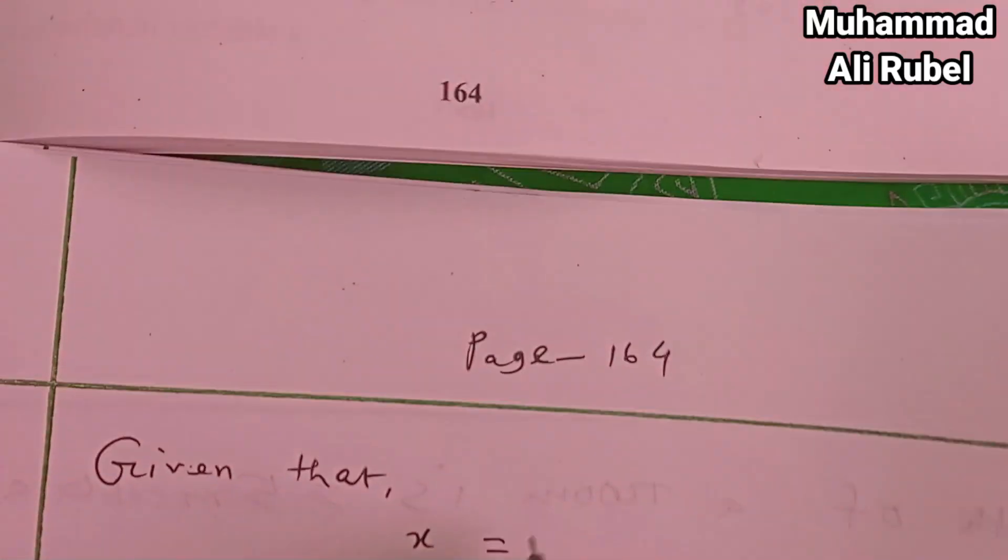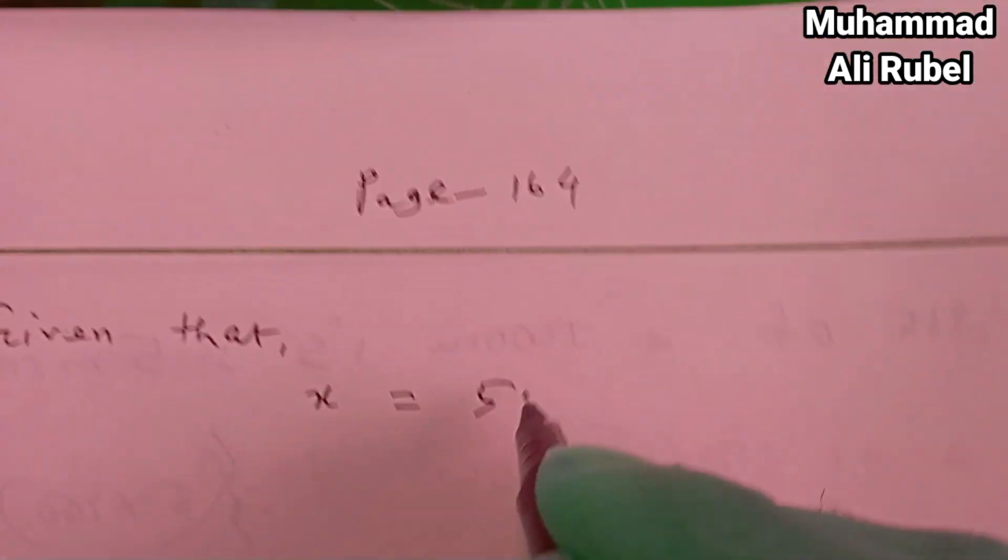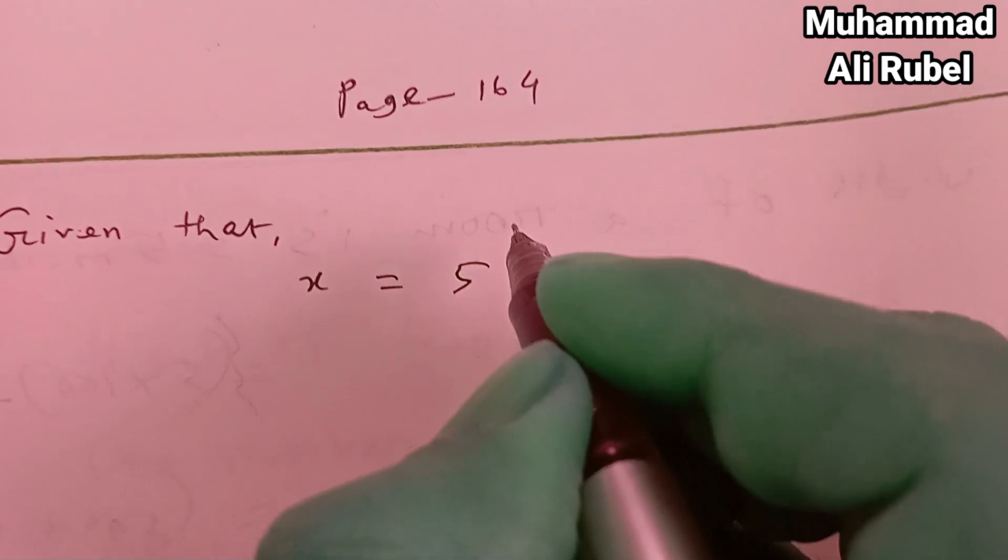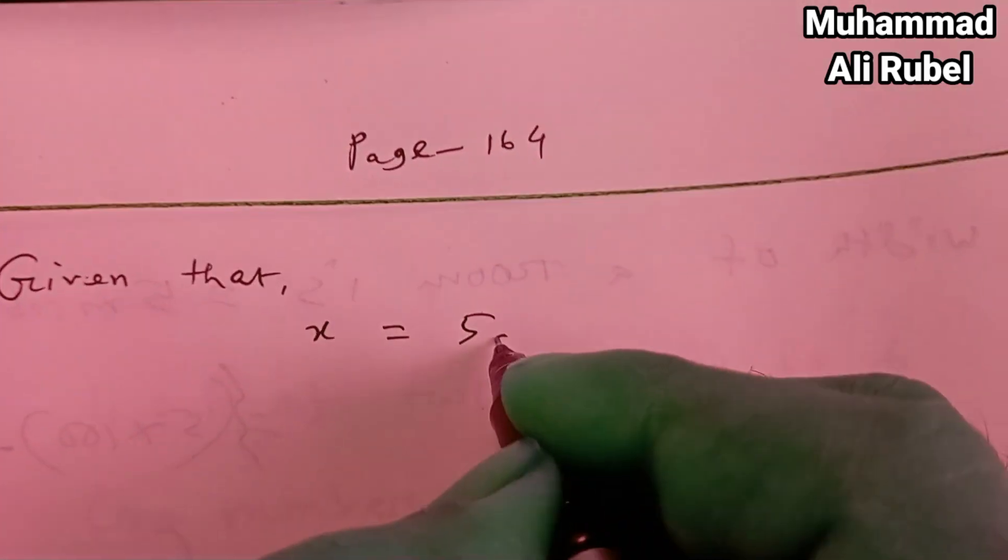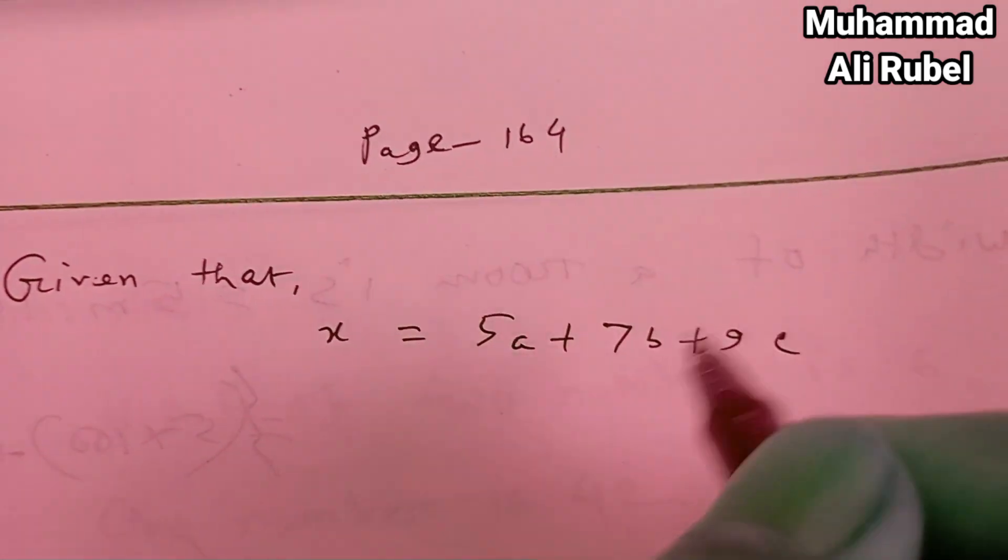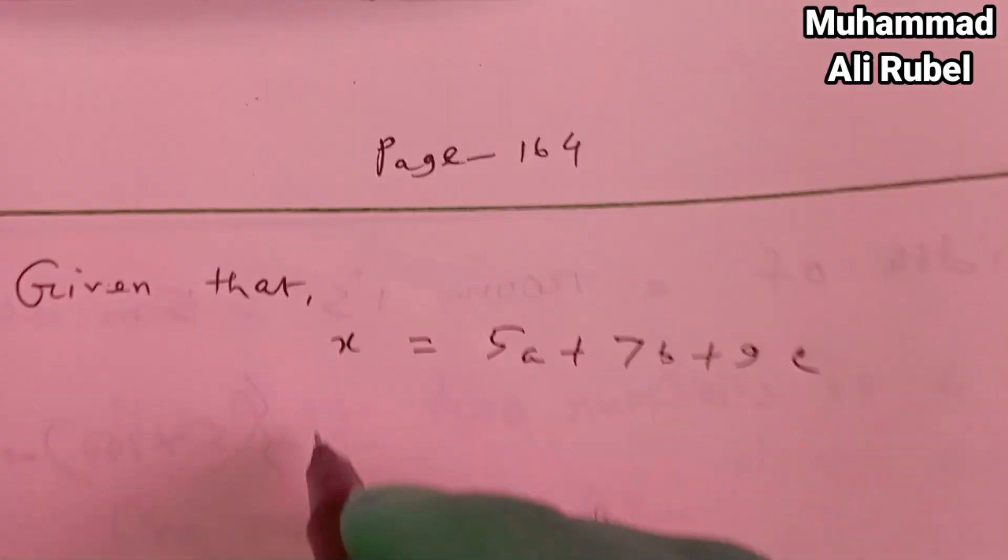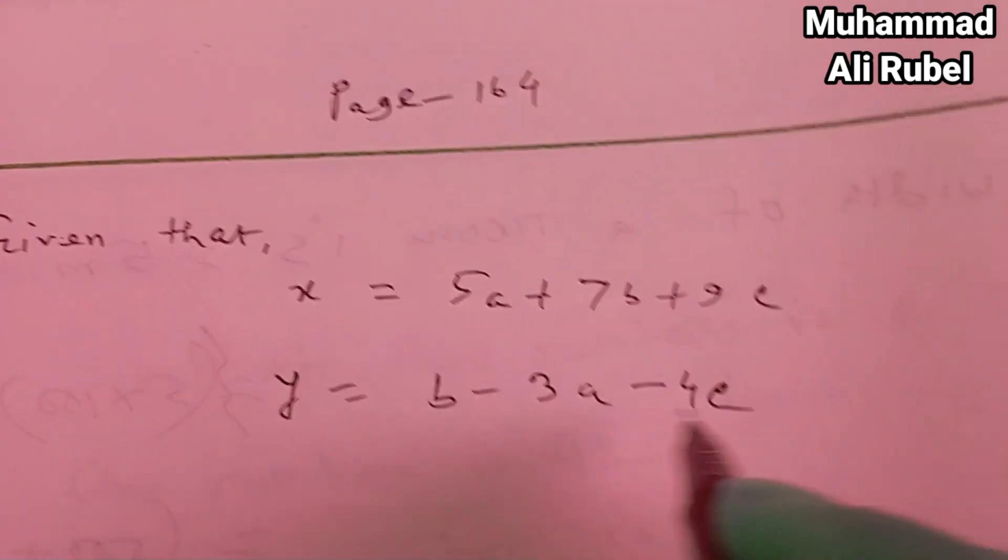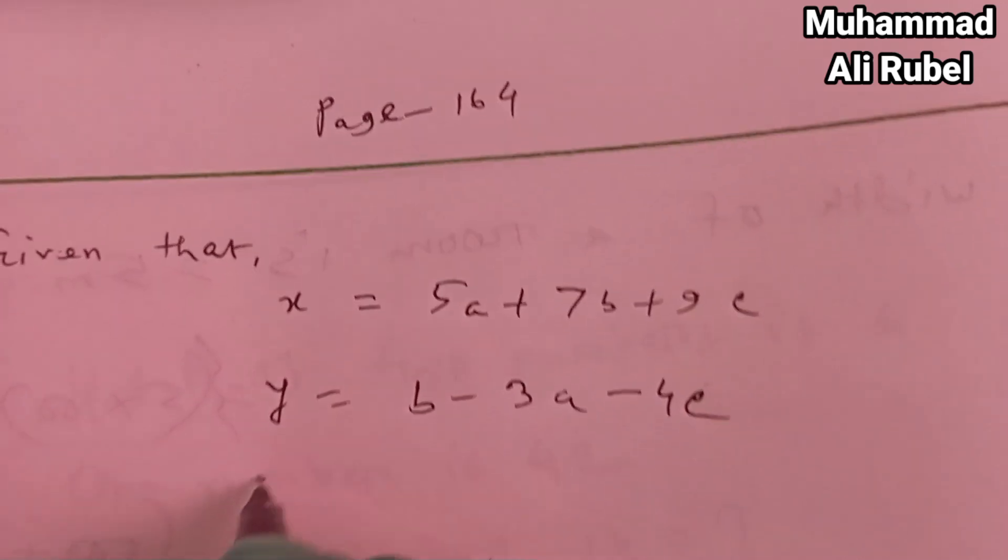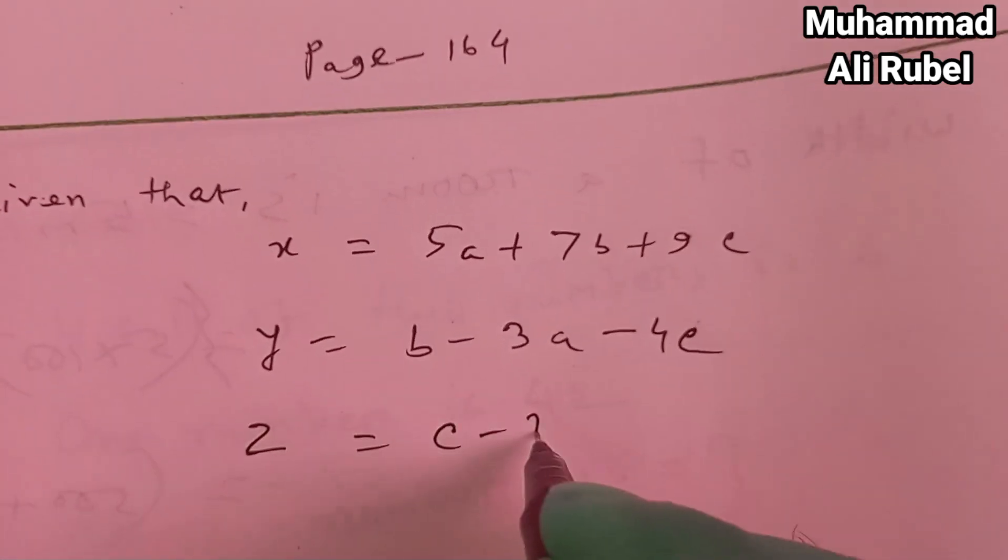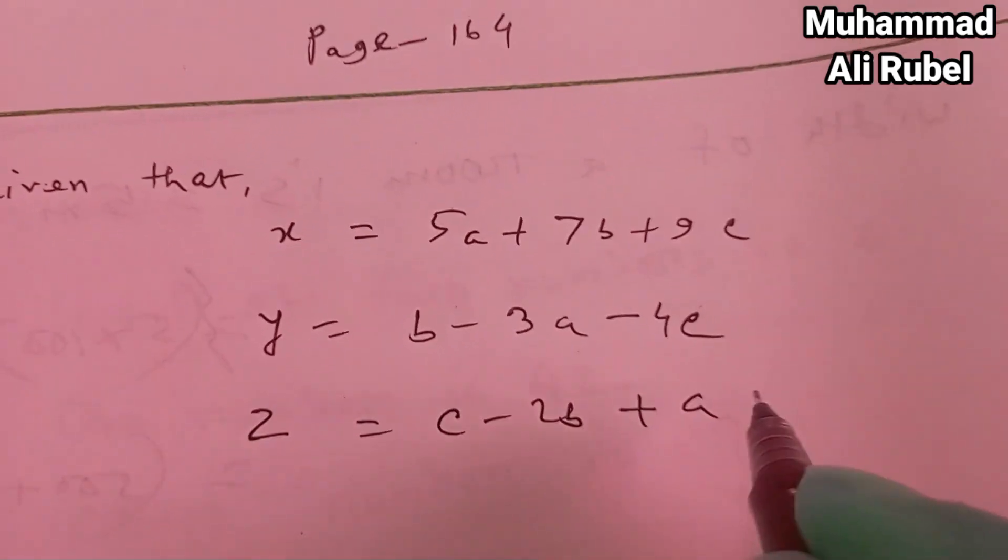Given that x equals 5a plus 7b plus 9c, y equals b minus 3a minus 4c, and z equals c minus 2b plus a.